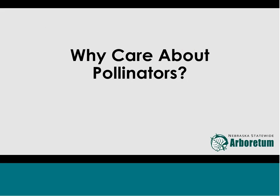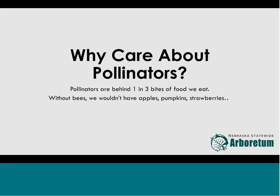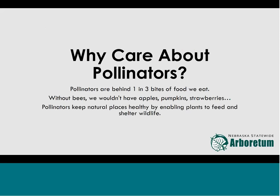Starting with why care about pollinators. Pollinators are behind one in three bites of food we eat — they're an essential part of the food web. Without bees, we wouldn't have fruits like apples, pumpkins, strawberries, or blueberries. Many of the great foods we find in the grocery store depend on pollination. Along with food, we can also attribute the health of our natural areas to pollinators, since they play a critical role in plant reproduction. Without pollinators, our prairies and woodlands would not look the same.